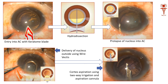Once that is done, we take a cannula inside and inject saline under the anterior capsule. Injecting saline under the anterior capsule loosens the whole nucleus, freeing it from its capsular attachment. This step is called hydrodissection.